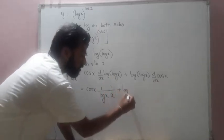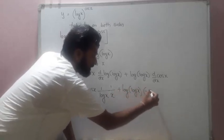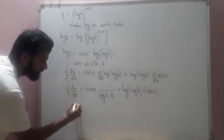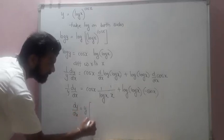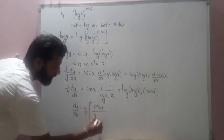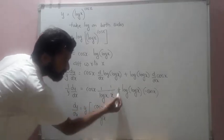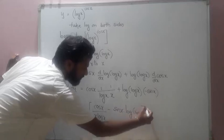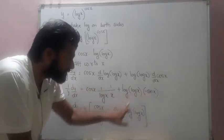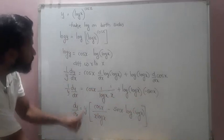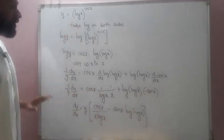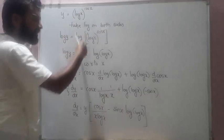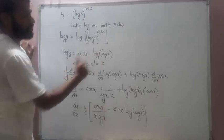Continuing the product rule: plus log(log x) times derivative of cos x, which is −sin x. So (1/y)·(dy/dx) = cos x/(x·log x) − sin x·log(log x). Therefore dy/dx = y · [cos x/(x·log x) − sin x·log(log x)], and you can replace y with the original expression. The key lesson: when we have function raised to function, take log on both sides so the power comes down, then apply the product rule.